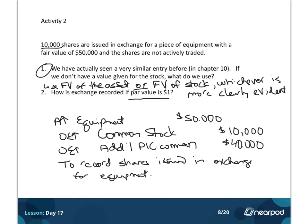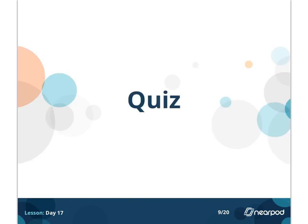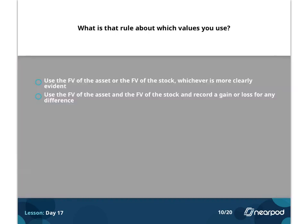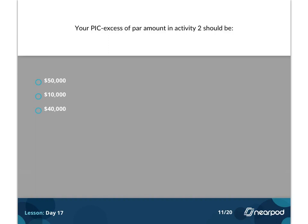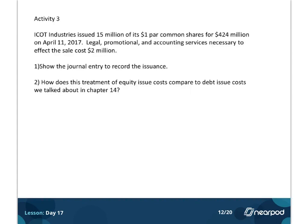Again, the big idea here is that common stock equals par value times the number of shares. The rule is: use the fair value of the asset or the fair value of the stock, whichever is more clearly evident.